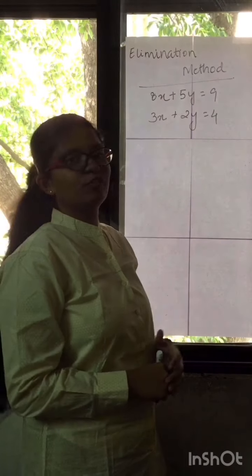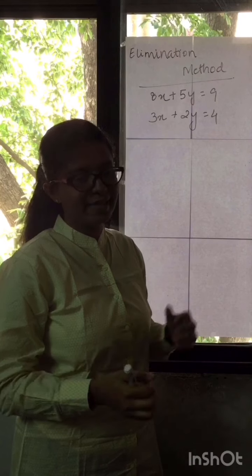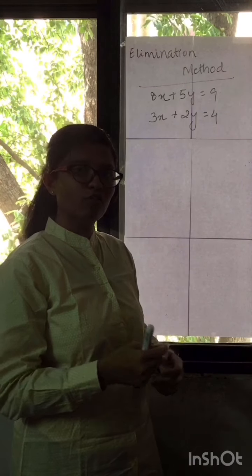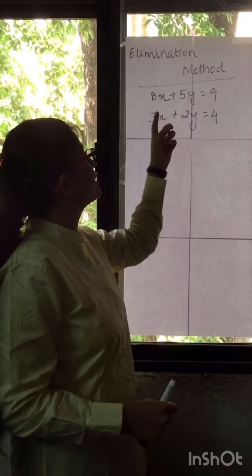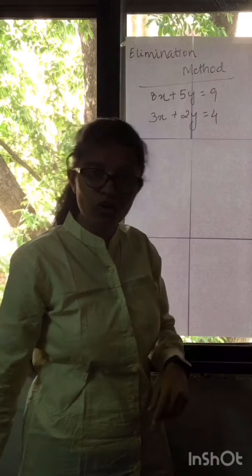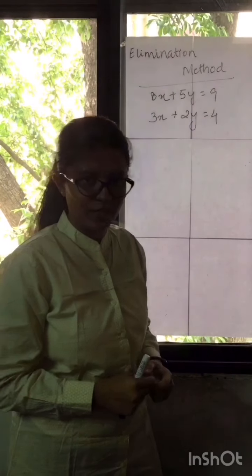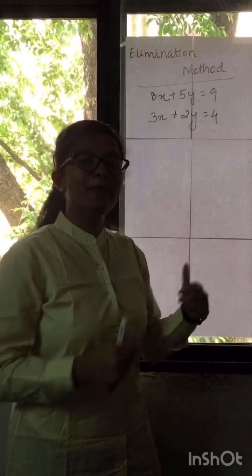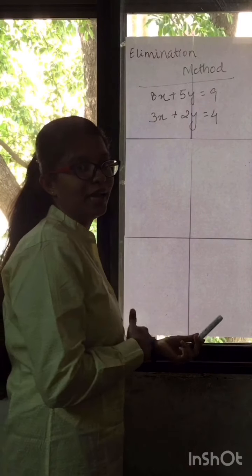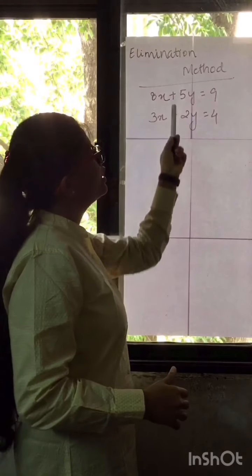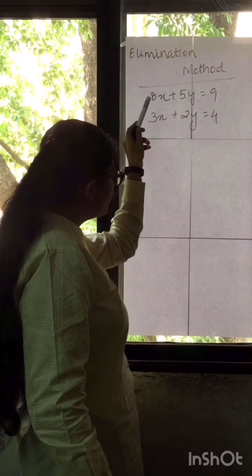Hello everyone, welcome to the second part of this series. In the last video we saw how to solve sums by the elimination method. The next sum we are going to solve is 8x plus 5y equals 9, and 3x plus 2y equals 4. This sum is a little more complicated compared to the last one, so please check out the last video to understand the elimination method. Let's start step by step. Both equations have two variables x and y, making them a pair of linear equations in two variables.